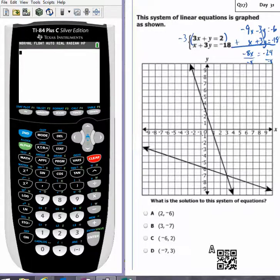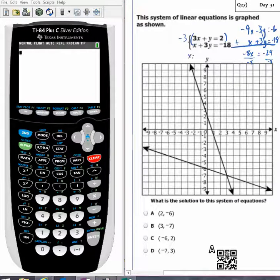So my x value is 3 which looks like this one right here but I'm not sure yet. I'm going to go back and plug in and find y.